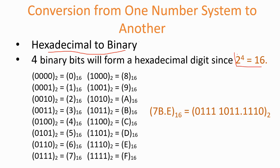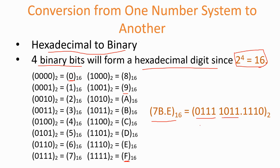For hexadecimal to binary conversion, the principle is that 2^4 = 16, so 4 binary bits represent a single hexadecimal digit. The mapping runs from 0000 (hex 0) through 1111 (hex F). For example, 7B.E in hexadecimal: 7 is represented as 0111, B as 1011, and E as 1110, giving the binary equivalent 0111 1011.1110.